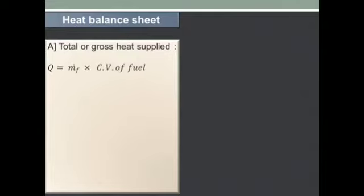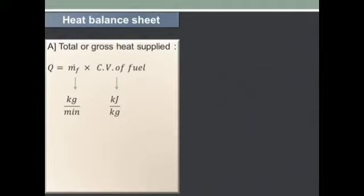That heat supplied is denoted by Q. It is the mass flow rate of fuel multiplied by the calorific value, that is Cv of fuel. The mass flow rate is measured in kg per minute and calorific value is measured in kJ per kg. Calorific value means how much amount of energy or heat is supplied by 1 kg of fuel.